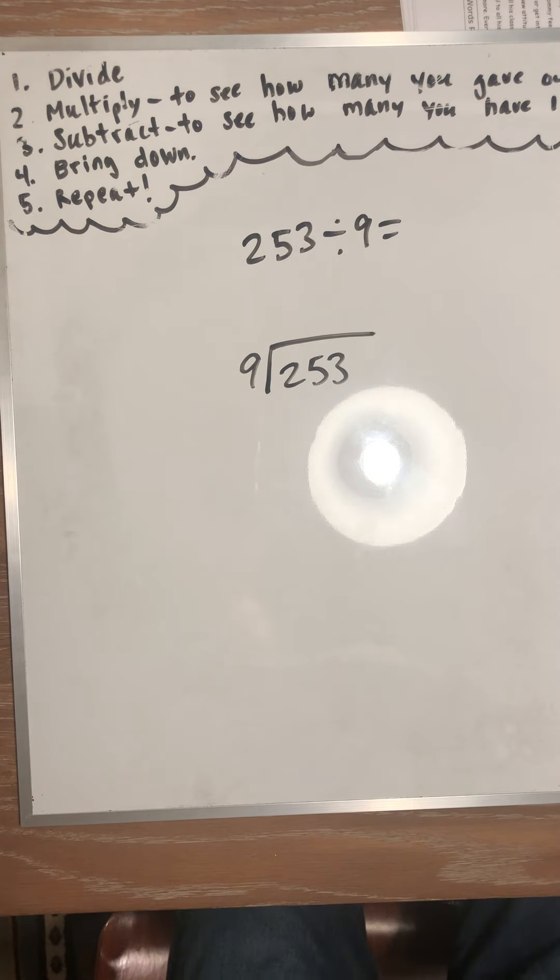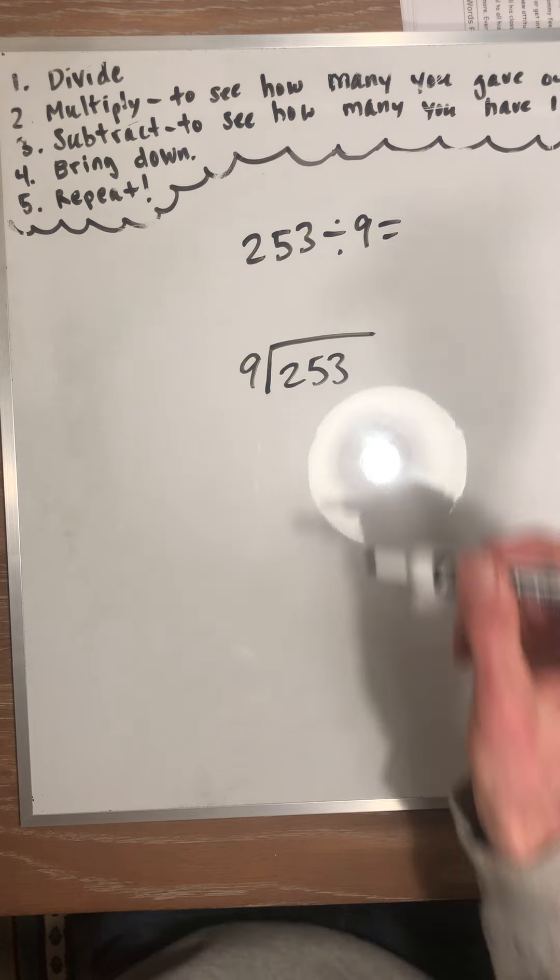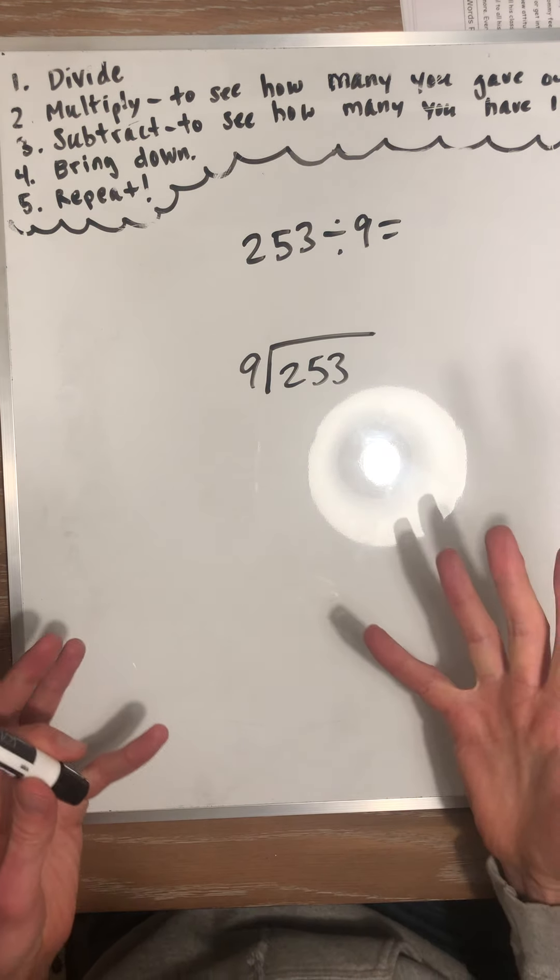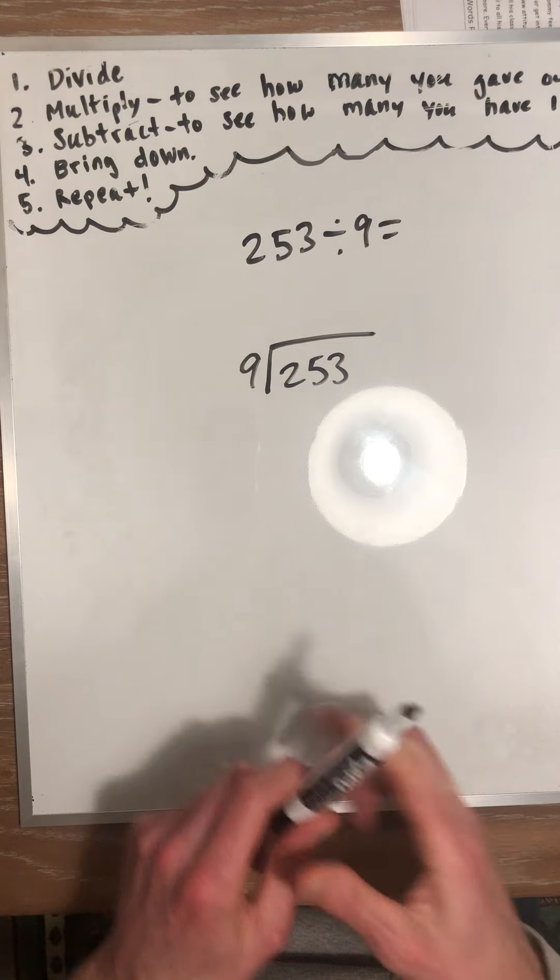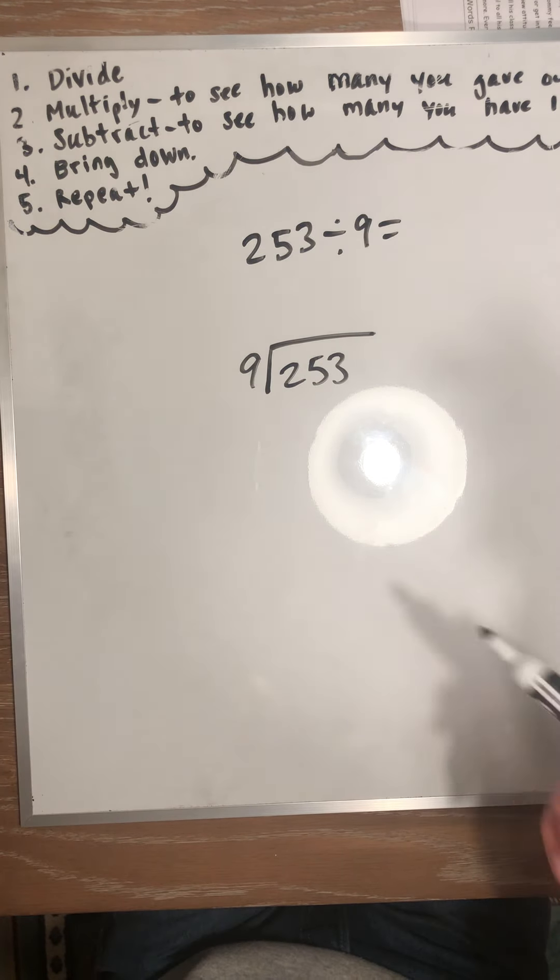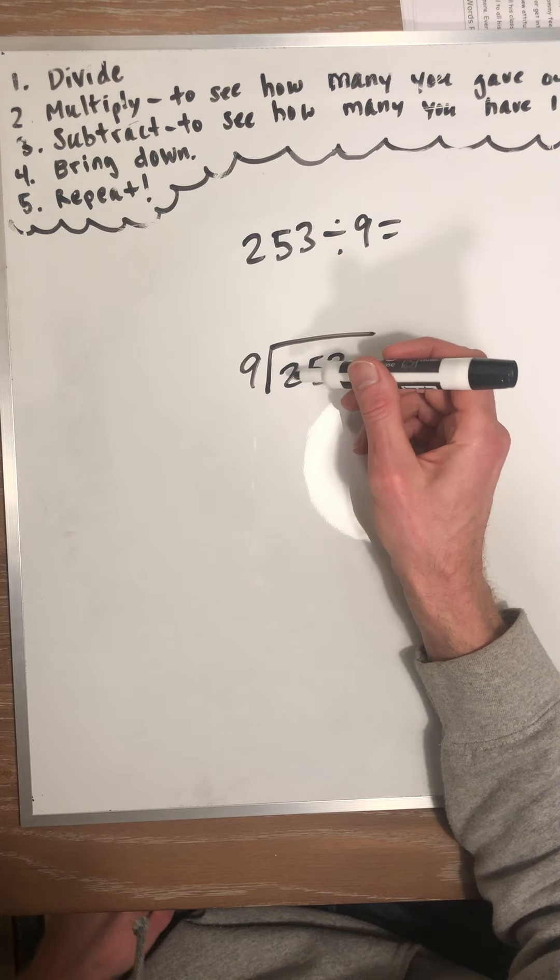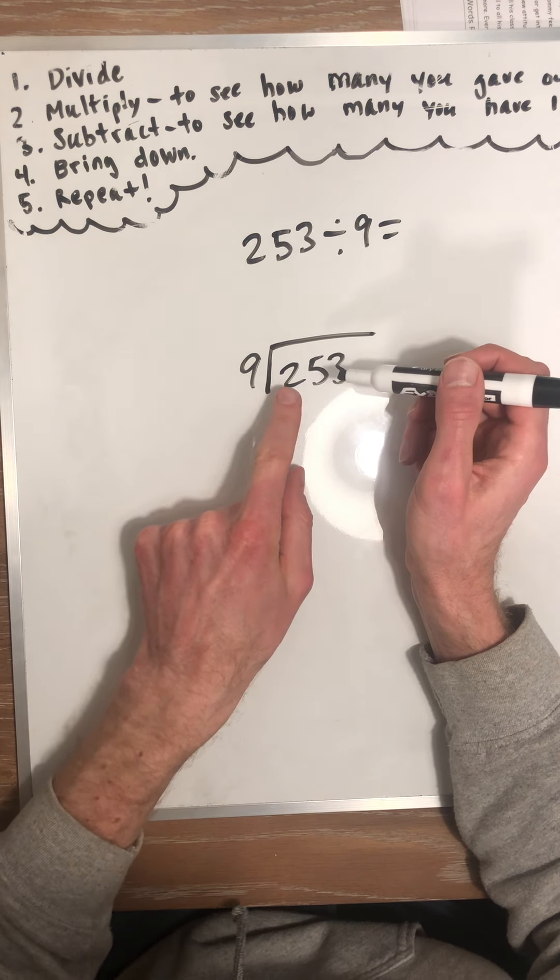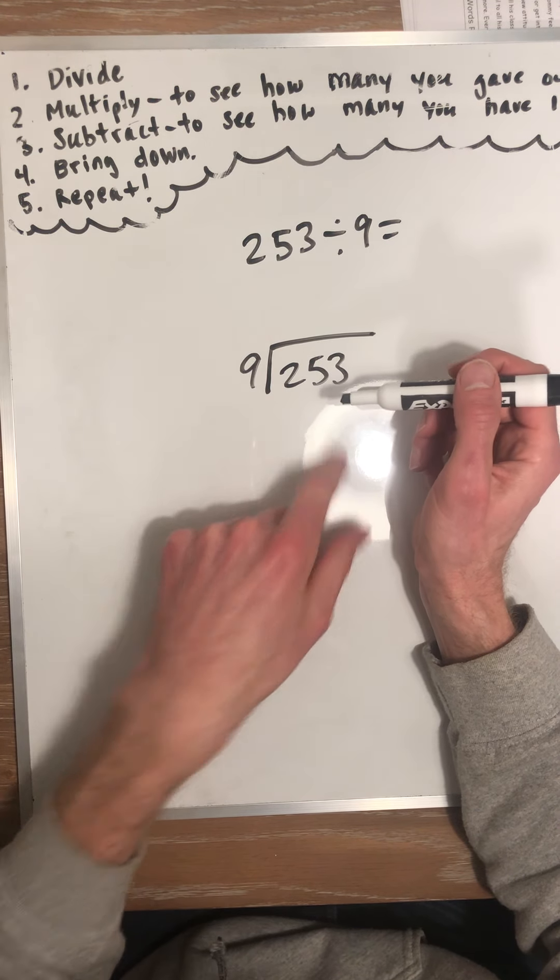Okay, so you have 253 pancakes. You've got 9 people at your party. How many pancakes does each person get? Well, let's figure it out. Okay, so we have, first you have to divide up the hundreds, then the tens, then the ones, just like always.